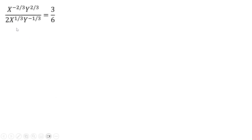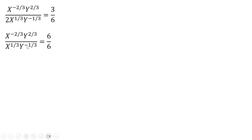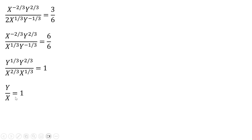Rewriting and simplifying: first, I cross-multiply 2 times 3, which gives us 6. Then, following the rules of exponents, X to the minus 2/3 moves into the denominator and becomes X to the 2/3, and Y to the minus 1/3 moves into the numerator and becomes Y to the 1/3. Adding up the exponents on the Y and X terms, we get Y divided by X equals 1. Solving for Y, Y equals X.